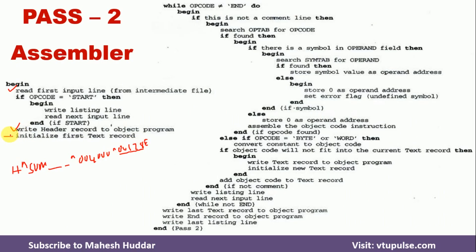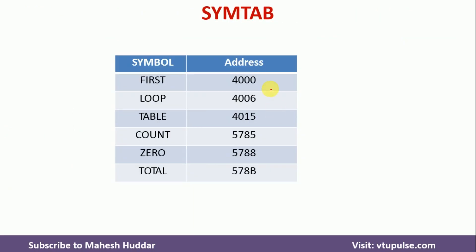Next, once we write the header record, we have to initialize the text record. We write T, then the first address of the text record which is 004000. The length is not yet known so we leave it for now and go on writing the remaining object codes. The while loop continues unless and until the opcode is equivalent to END — meaning we keep performing the loop until we reach the END statement.